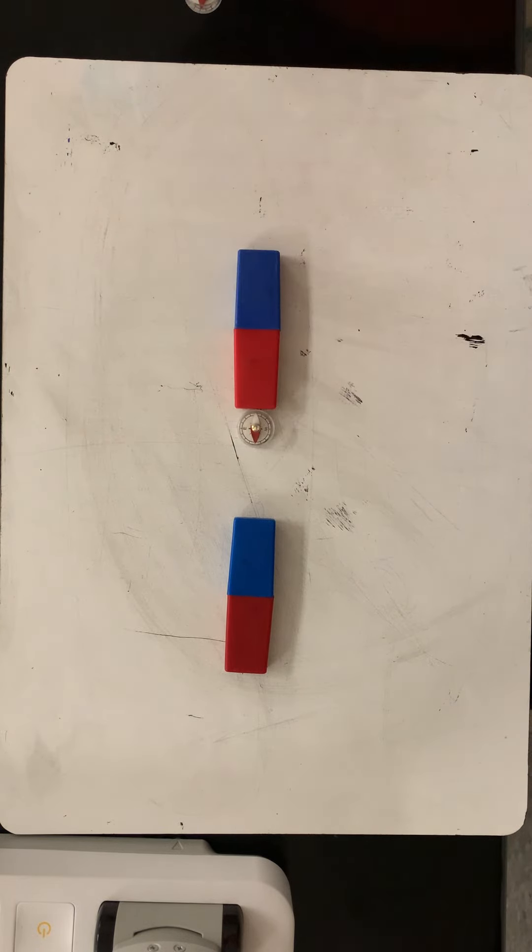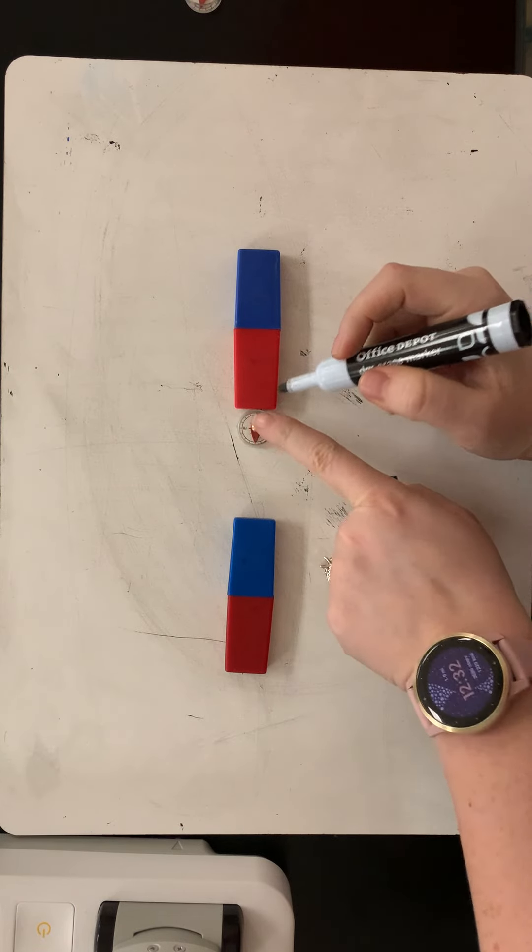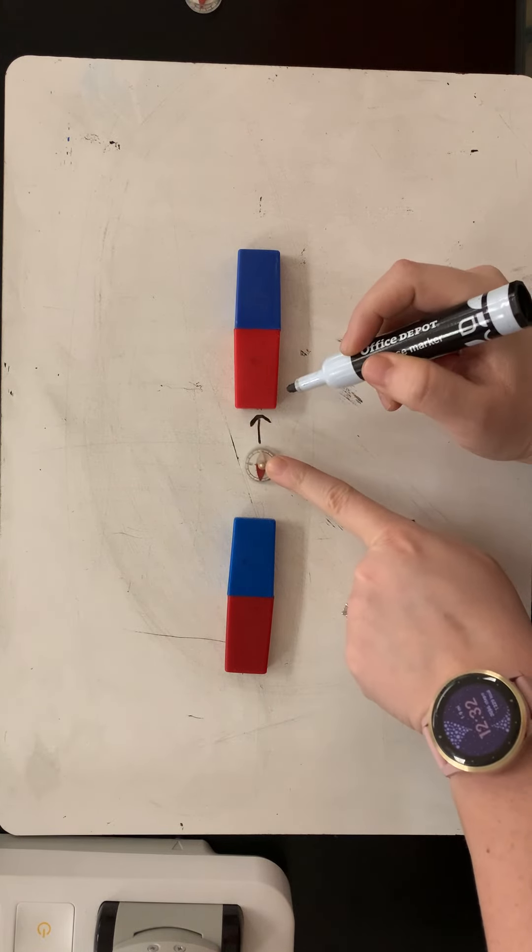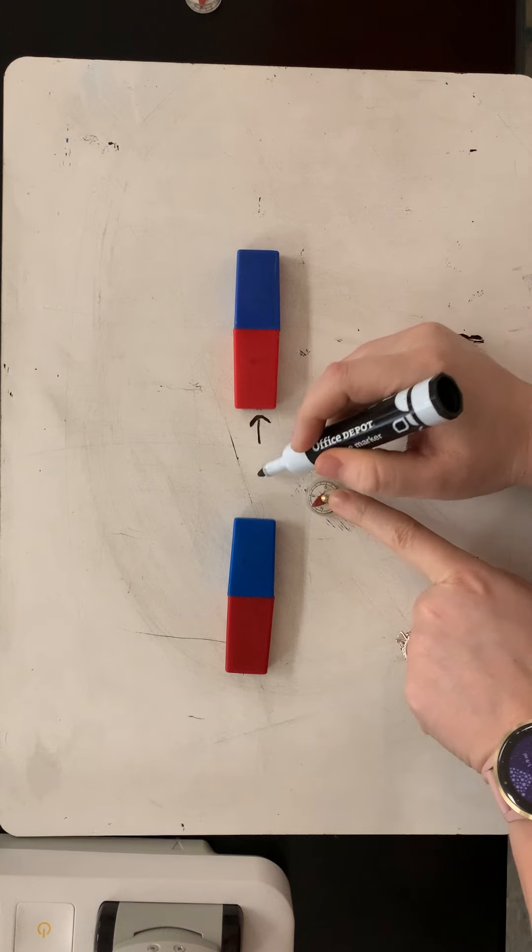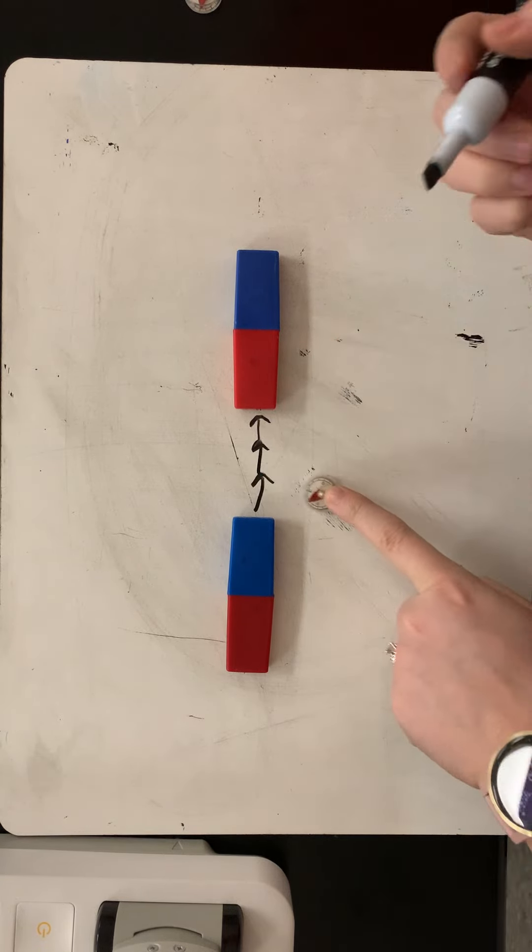So I'm going to put the compass right there. And I can see again, the white is going to be forward. So we're going to go like that. Oh, it's also straight there. Oh, it's a straight line from the blue to the red.